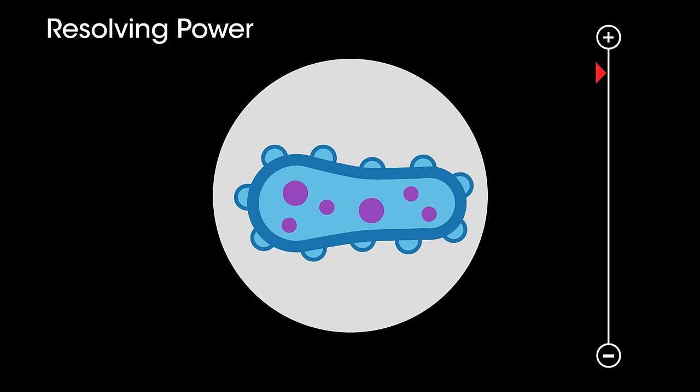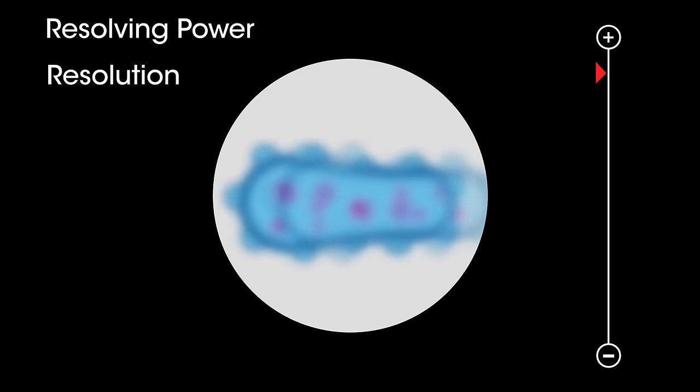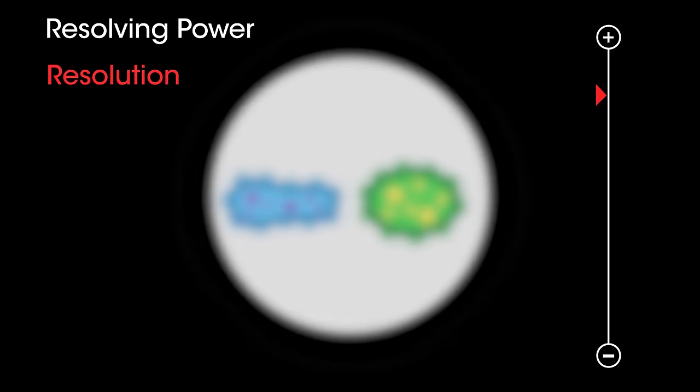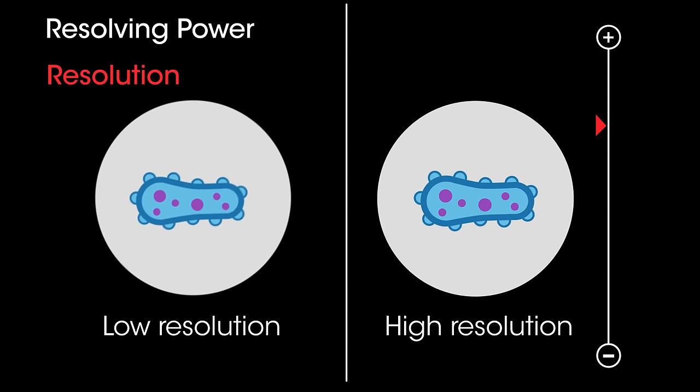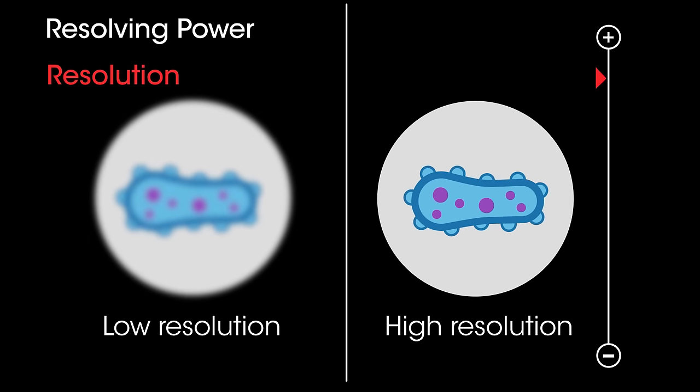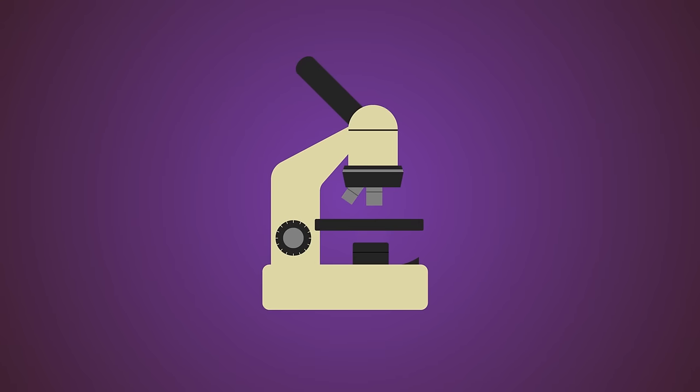Resolving power, or resolution, is also a feature of microscopes. Resolution is the ability to distinguish two different points as being separate. Basically, using a microscope with high resolution means that you can increase the magnification further without the image becoming blurry. The light microscopes you may use at school have quite low magnification and resolution.